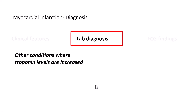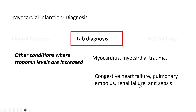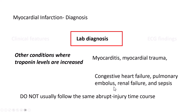It is very important to understand the clinical background when assessing troponin levels, because other conditions can also cause elevated troponins — including myocarditis, myocardial trauma, congestive heart failure, pulmonary embolus, renal failure, and sepsis. Fortunately, these conditions do not usually follow the same abrupt injury time course of rising at 2–4 hours, peaking at 24–48 hours, and returning to normal at 6–7 days. This is why it is important to measure troponin levels serially — on day 1, day 2, and day 3 or 4 — to confirm the decreasing trend.